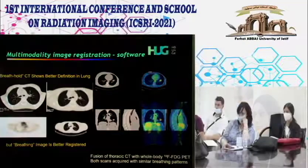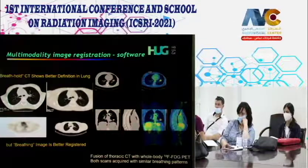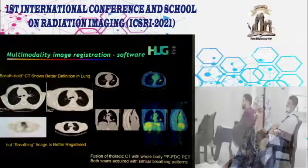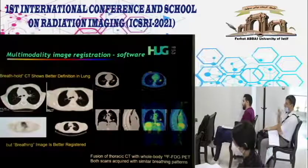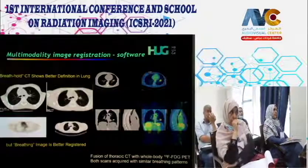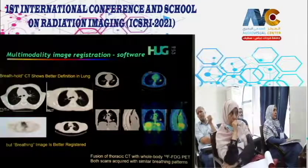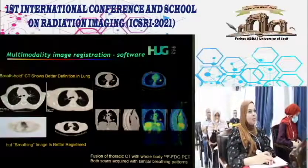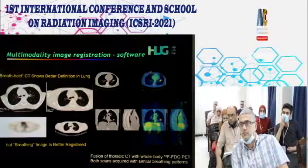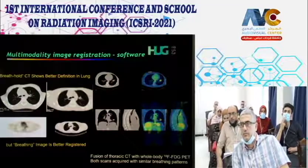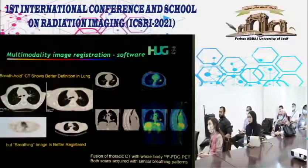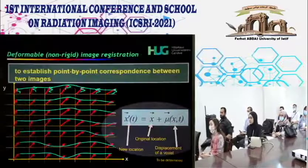Registration is extremely challenging in the thorax and upper abdomen: x-ray CT takes only a few seconds while PET takes 3–4 minutes, and differences in breathing patterns cause misregistration. Careful protocol adjustment can achieve good registration quality.